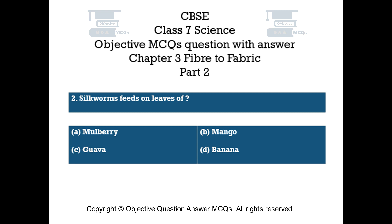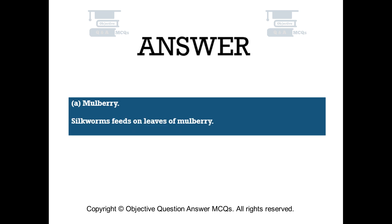Question number 2. Silkworms feed on leaves of. Option A: Mulberry. Option B: Mango. Option C: Guava. Option D: Banana. The right answer is Option A — Mulberry. Silkworms feed on leaves of mulberry.